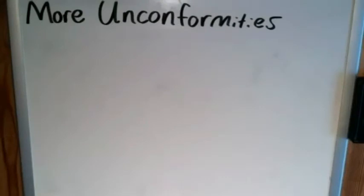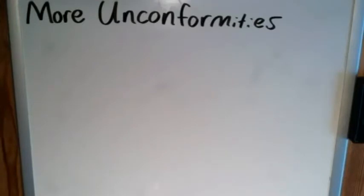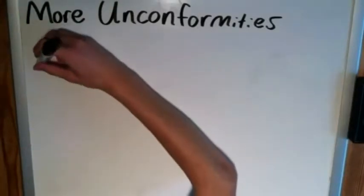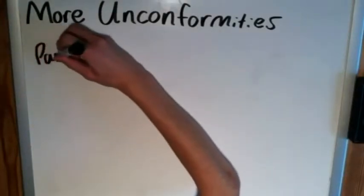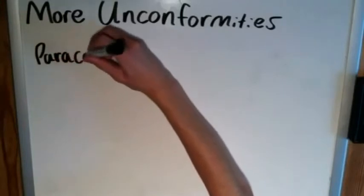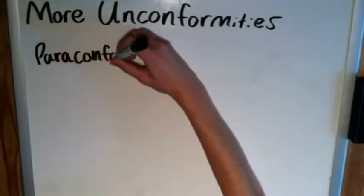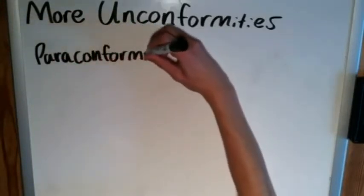Hey everyone, welcome back. In the last video we covered the three most basic types of unconformities — disconformities, parallel unconformities, and nonconformities. So today we're going to talk about three more types of unconformities. The first one is called a paraconformity.